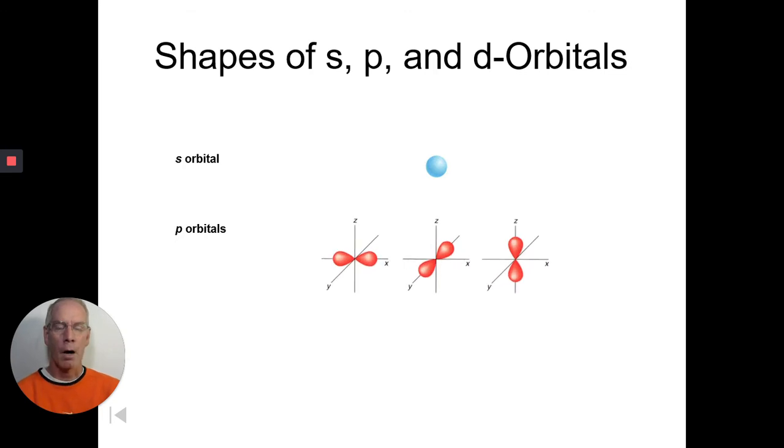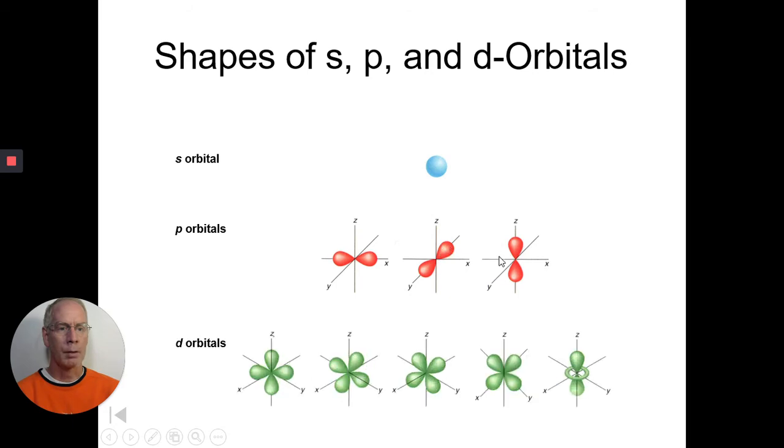Then there are 3 different P orbitals. Now, they might look the same, but they're actually different. This one is P sub X. It's on the X plane. This one is P sub Y. It's on the Y plane. And this one's on the Z plane, three-dimensionally. When we get to the D orbitals, there's 1, 2, 3, 4, 5 of those. And when we look at the F orbitals, there's going to be 7 of those.